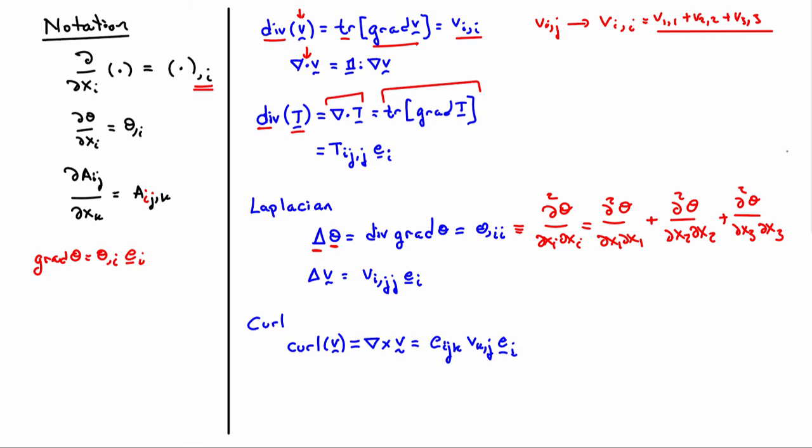The last bit of notation is the curl operator. The curl of a vector field is sometimes written as nabla cross v - a cross product. It's written additionally as eijk (the permutation symbol) vk comma j ei. There's a sum on the i and j that you have to be aware of. These are just definitions - these quantities don't come up too often.